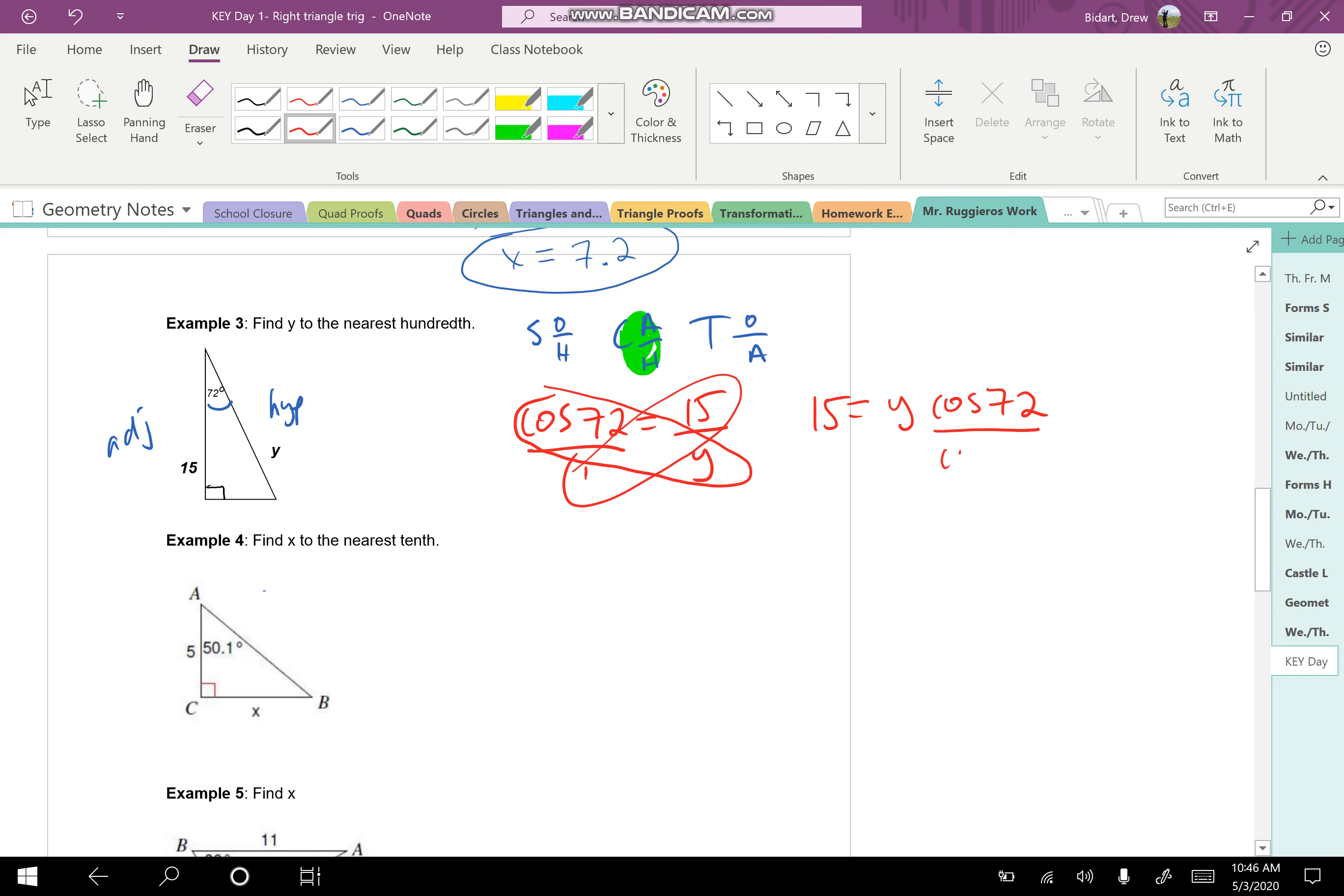So I can't do this in my calculator in one step. I actually have to separate this by dividing by the cosine of 72. So when I divide, now I go to my calculator, and I'm going to type in 15 divided by cosine of 72.